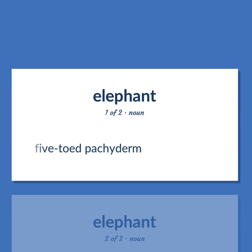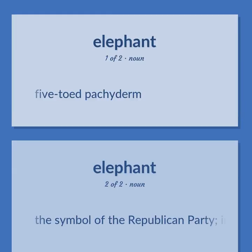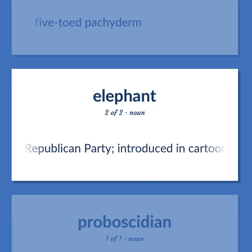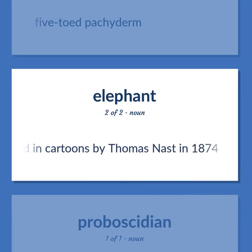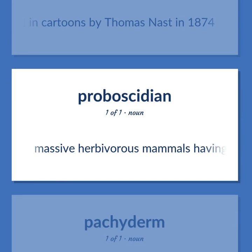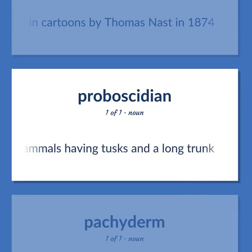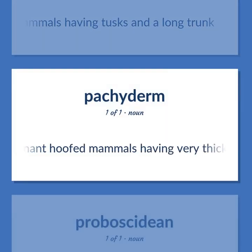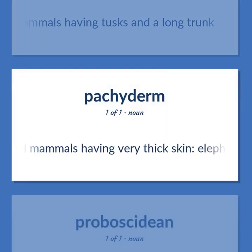Five-toed pachyderm. The symbol of the Republican Party, introduced in cartoons by Thomas Nast in 1874. Massive herbivorous mammals having tusks and a long trunk. Any of various non-ruminant hoofed mammals having very thick skin — elephant,